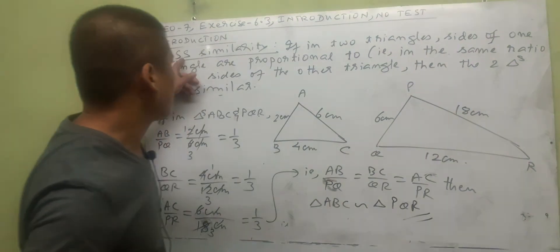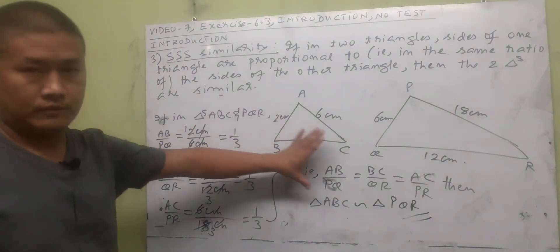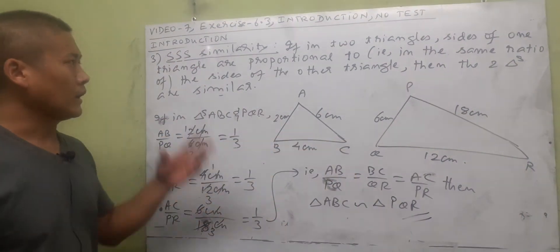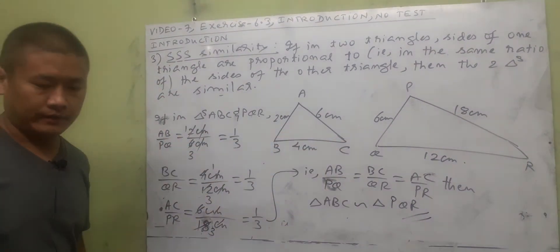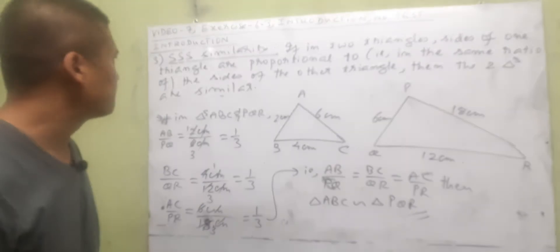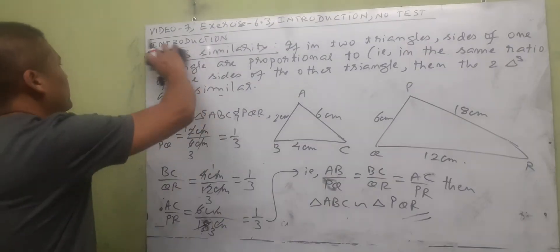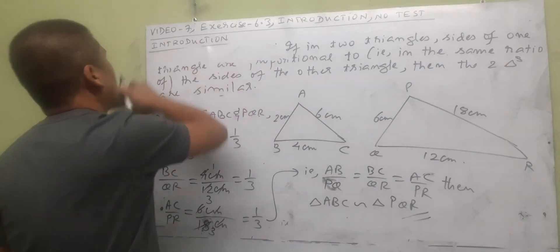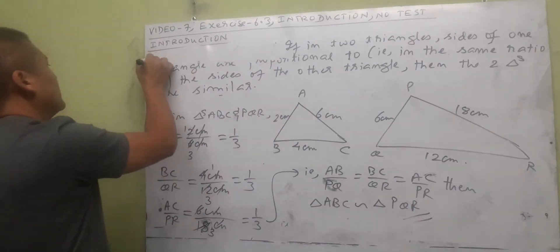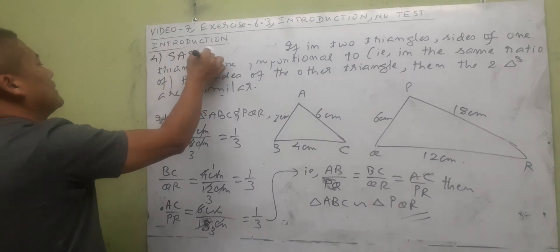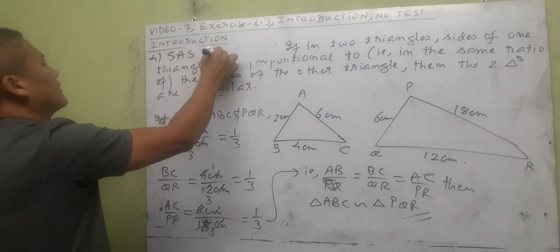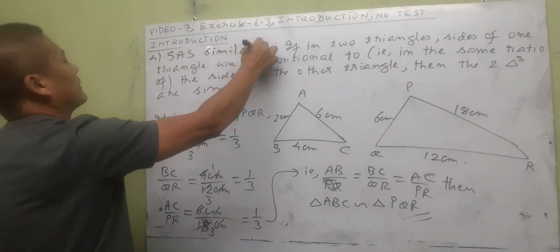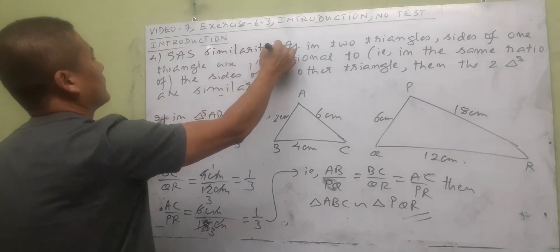Since all three corresponding sides are proportional (ratio 1:3), the theorem states triangle ABC is similar to triangle PQR by the Side Side Side — SSS — similarity condition.